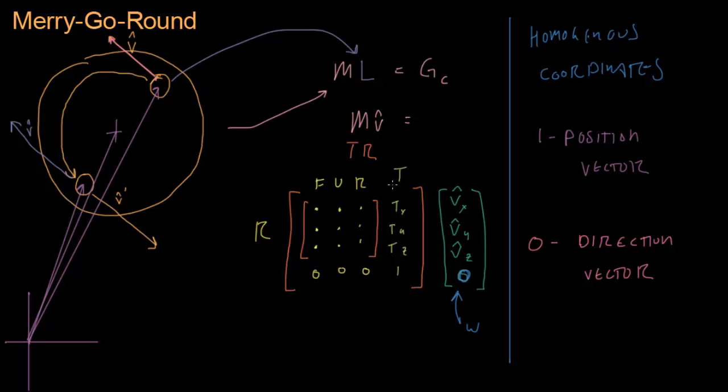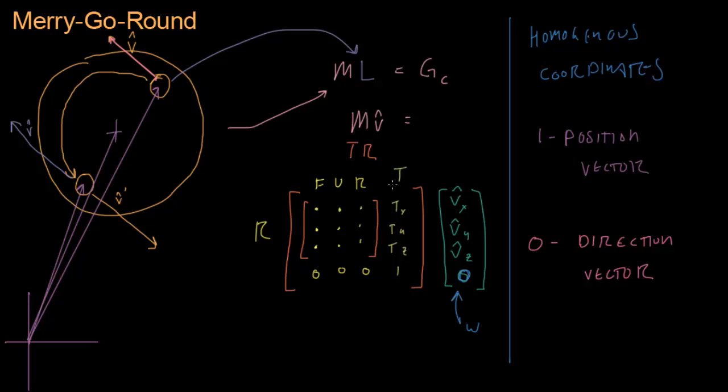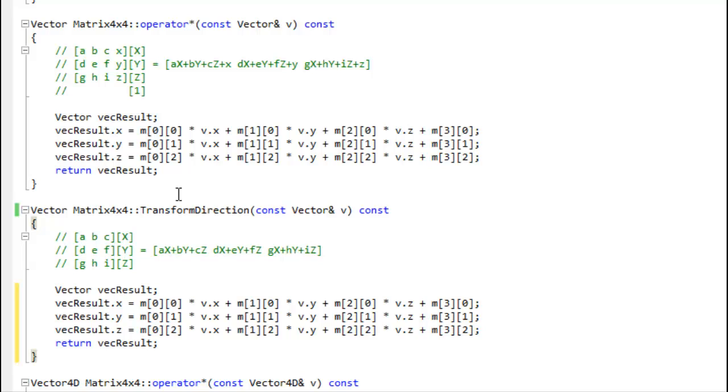So knowing this, keeping this in mind, we have to go back to our matrix library and create a new way of multiplying a vector by a matrix that keeps this position or direction stuff in mind. So what we're going to do is that. So here's our transform direction vector function, and really it's going to be very similar to our transform vector.